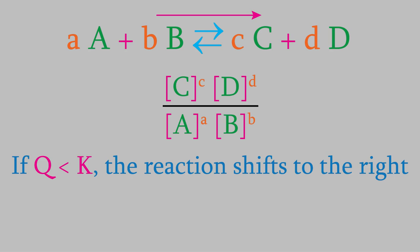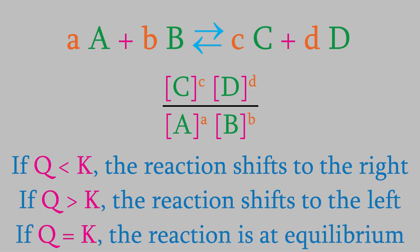The opposite is true if Q is greater than K. In that case, we'd have too much product, and we'd have to decrease the amount of product in order to reach equilibrium. So that means the reaction would shift to the left. And if Q is equal to K, that means we're at equilibrium, so the forward and reverse reactions would be happening at the same rate.